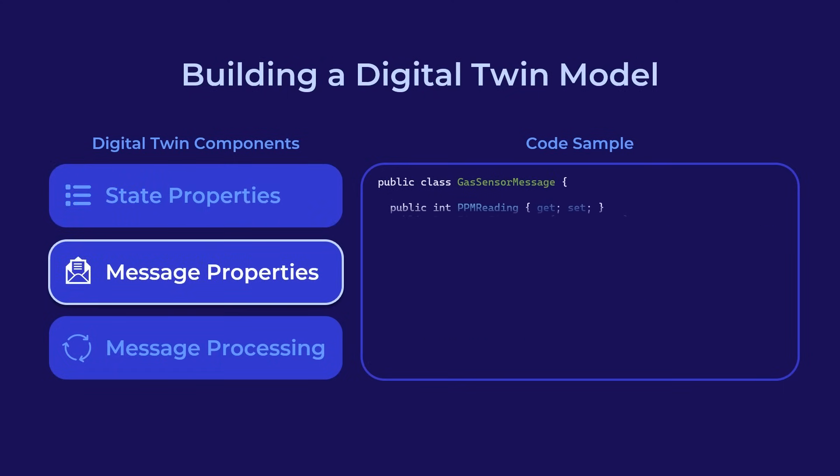Next, define the message properties. These describe the values the smart gas sensor sends in each message. When a digital twin instance receives a message from a sensor, it will process these values and update its state properties.